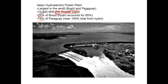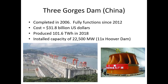Three Gorges Dam is now the largest in the world. It's been fully functional since 2012 and was completed in 2006, at a huge cost of over 30 billion US dollars. In 2018 it produced over 100 terawatt hours of total energy. Its capacity is nearly twice that of Itaipu, topping off over 22 gigawatts — that is 11 times the capacity of Hoover Dam.